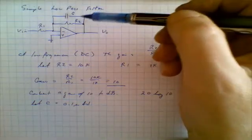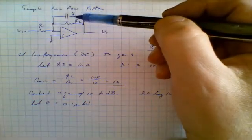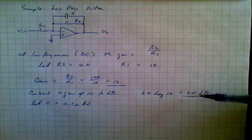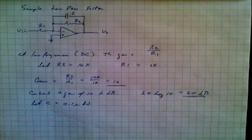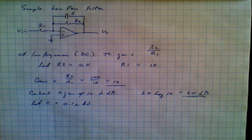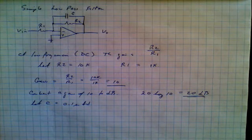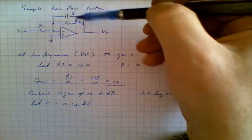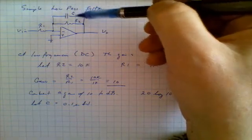So the question now comes about, at what point does the gain change from being 20 dB to where it begins falling off towards zero? Well, the answer is found in the relationship between these two characteristics, the capacitor and the resistor.